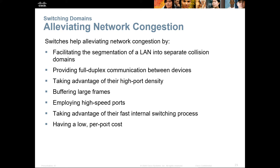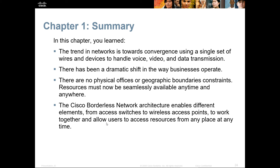To alleviate network congestion, we separate LANs into collision domains using switches, provide full duplex communication both ways, take advantage of high port density, larger frames, and higher speeds. We also take advantage of quality of service and other network resources available. The big thing from Chapter 1 that is normally tested on: make sure you understand what converged means, and make sure you understand the concept of borderless network architecture. Thank you, and I hope you have a great day.